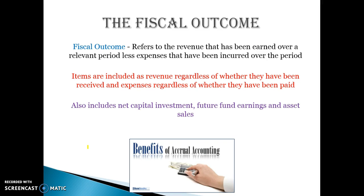The last thing in this video is the fiscal outcome. The underlying cash outcome is still recording cash transactions, whereas the fiscal outcome records all revenues and expenses. The difference is — and this will make more sense to accounting students — if we built infrastructure in one given year but we're not paying for it until the next year, it won't get included in the underlying cash outcome until next year. But because the infrastructure was done in this period, it should be counted for this period, so we include it in the fiscal outcome but not the cash outcome. It hasn't been paid in cash, but it was an expense for this period.